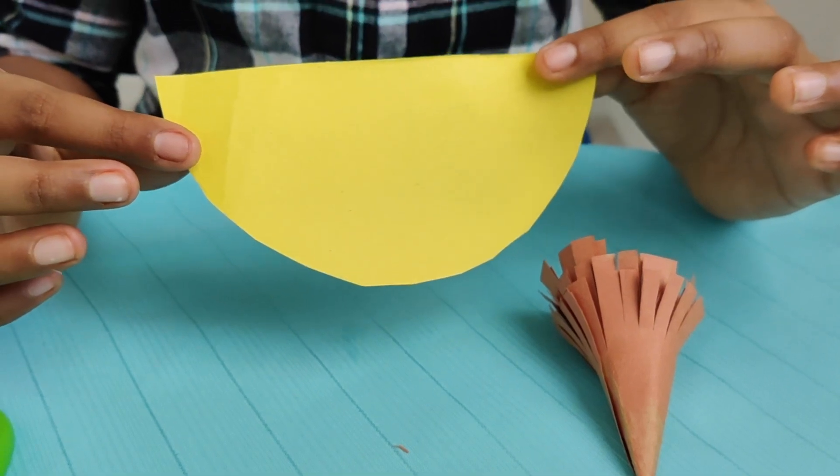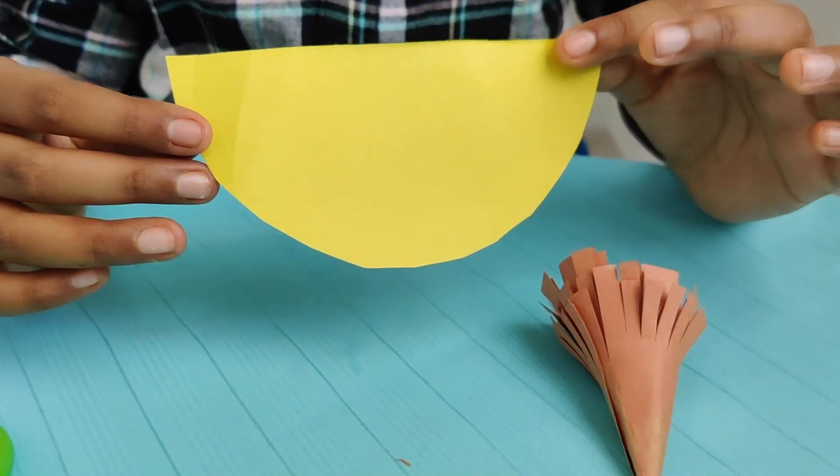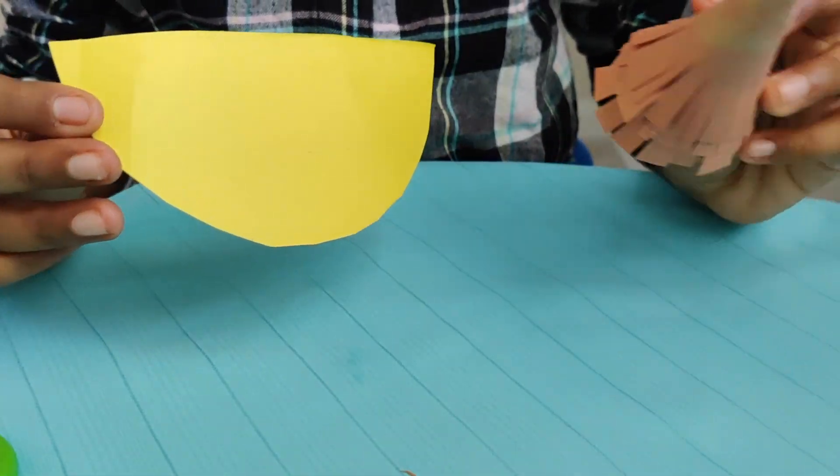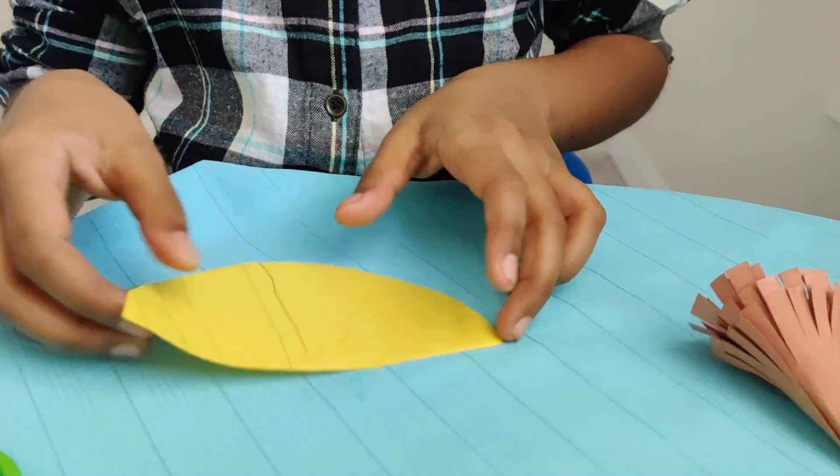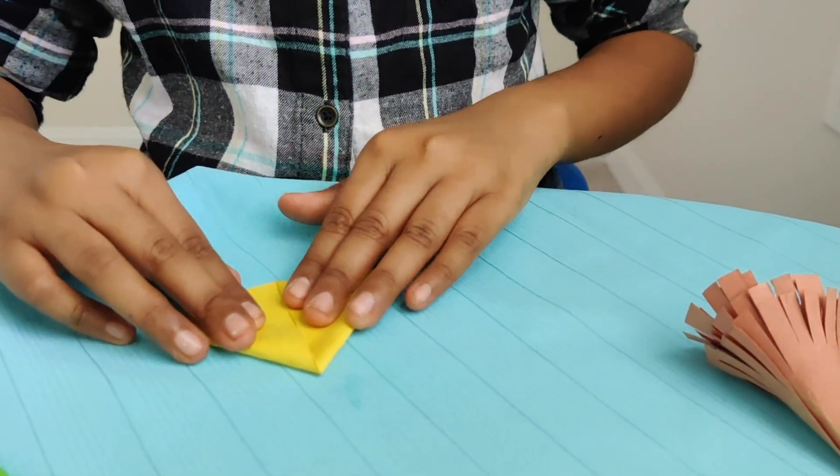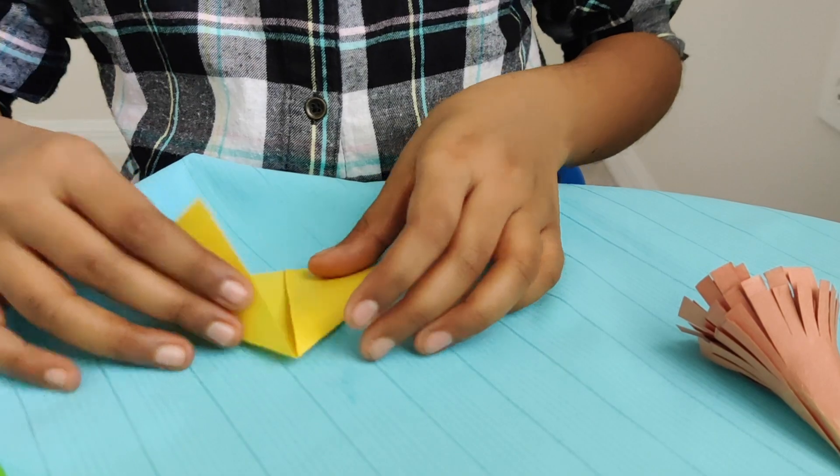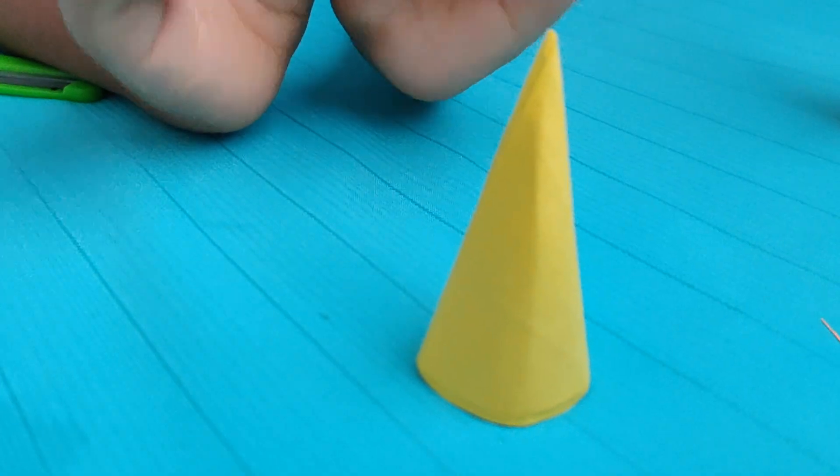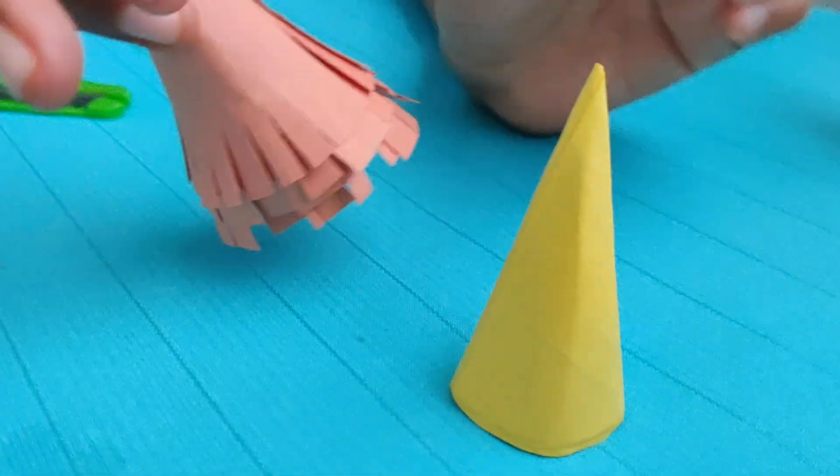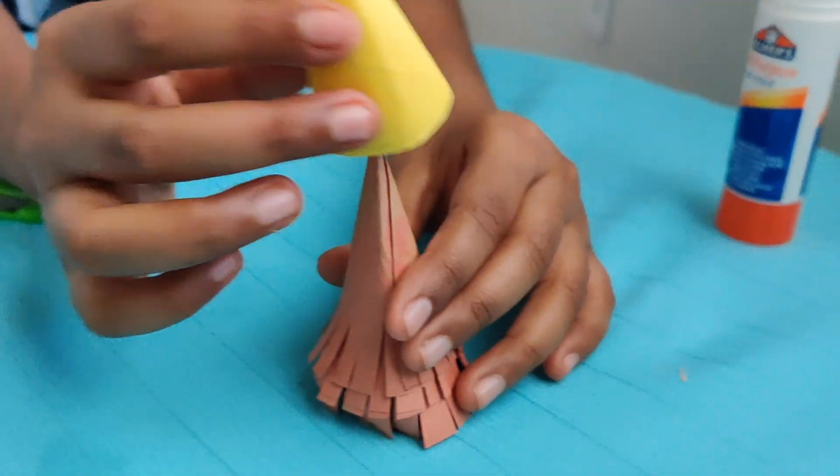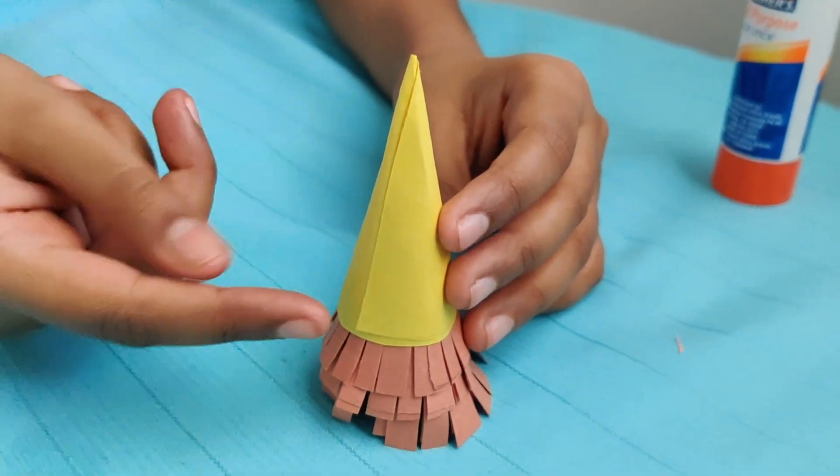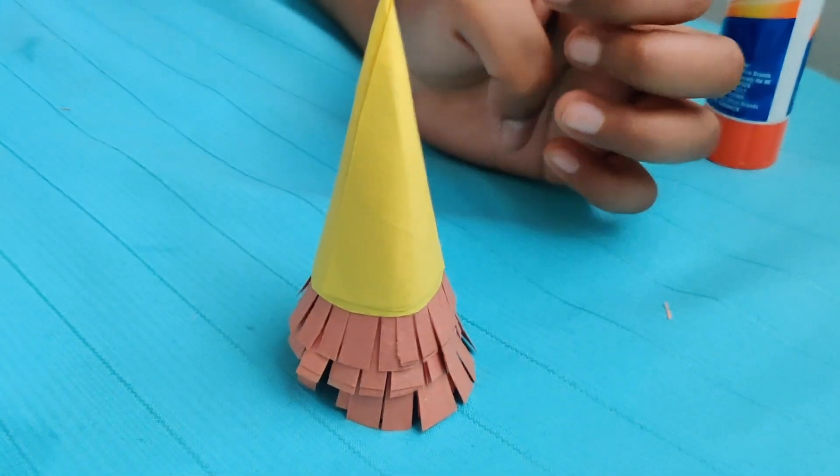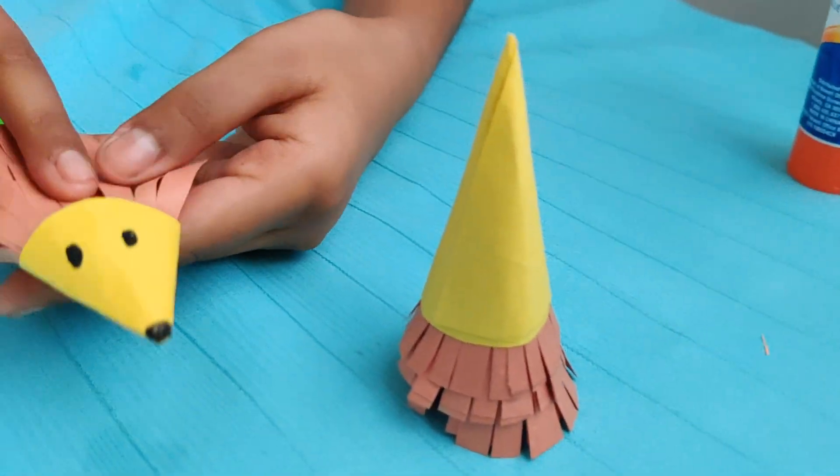Take a half circle of yellow construction paper, the same circle that we used for the brown. Put it on. Make it a thin cone and put it on. And cut it a little bit so you have a small gap.